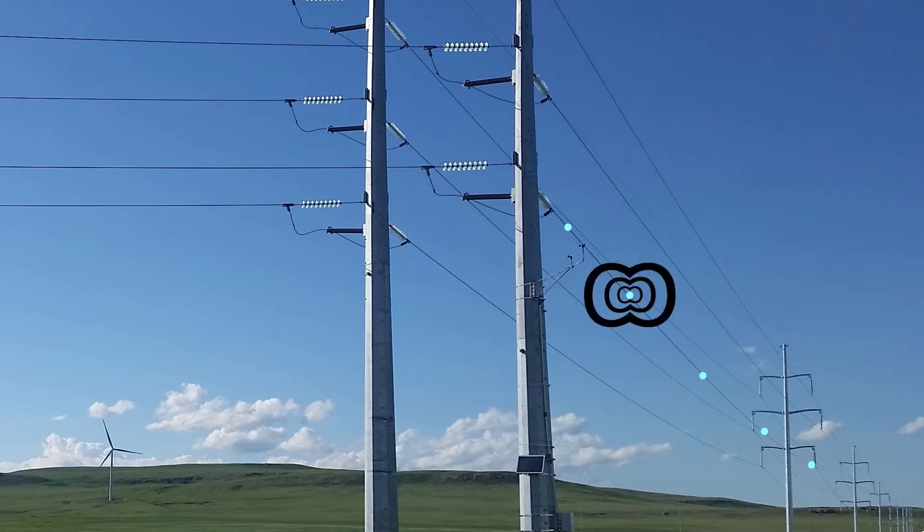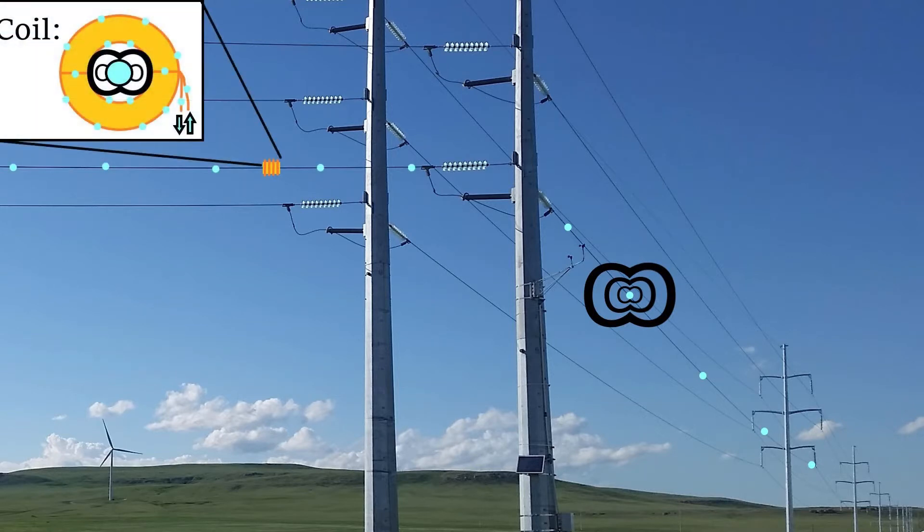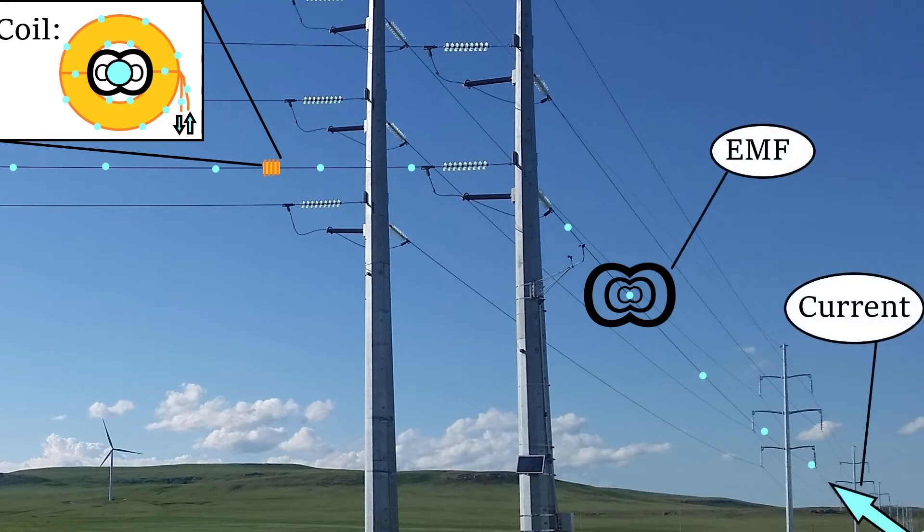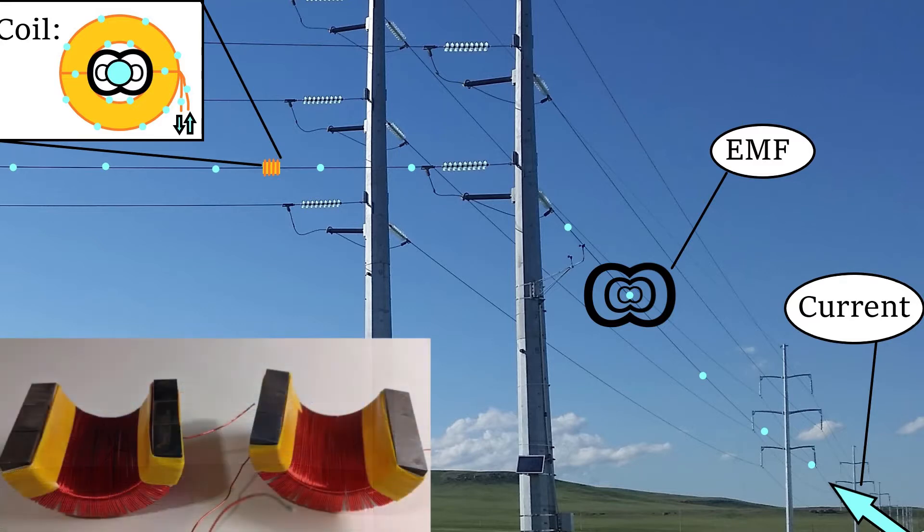Using an inductive coil, we turn that electromagnetic field into usable electricity. Because the EMF from the power line gets exponentially weaker the further away from the line that you are, our coil is very close to the power line, but it doesn't need to necessarily touch it.